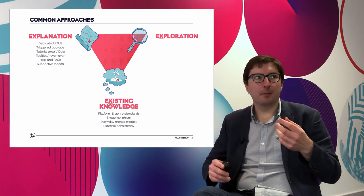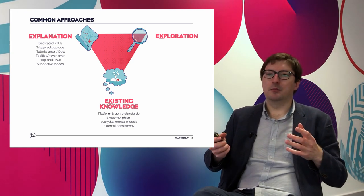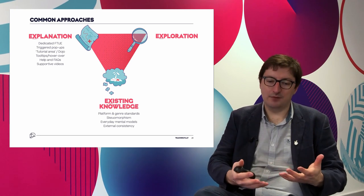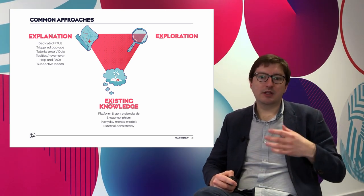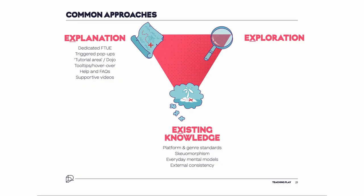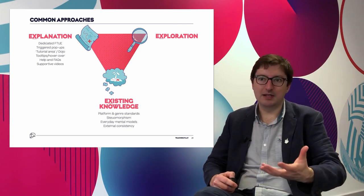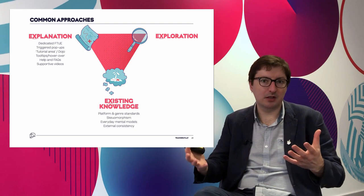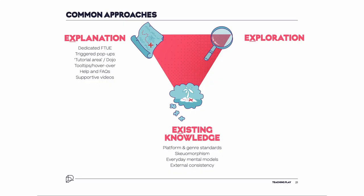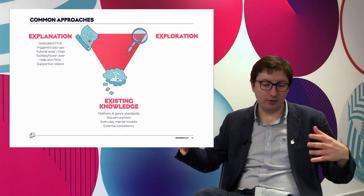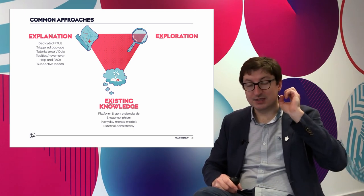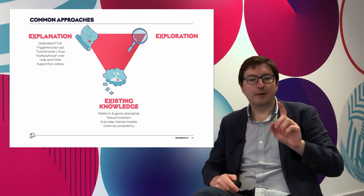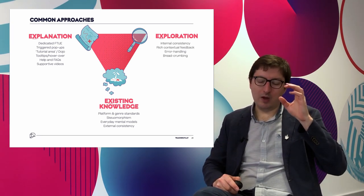For games wanting to lean into existing knowledge, we're talking about platform and genre standards — things that are common across multiple games, like using X to jump or LT to aim down sights. Players can bring that existing knowledge meaningfully into your game if you choose to duplicate it. There's also skeuomorphism — pastiching the aesthetics of the real world to help players intuit what game rules are. It's also common for games to leverage everyday mental models, like gold, silver, bronze for first, second, third place, or a compass with north, south, east, west. Games with meaningful consistency with the outside world, other media, or common rules allow players to apply their existing knowledge.